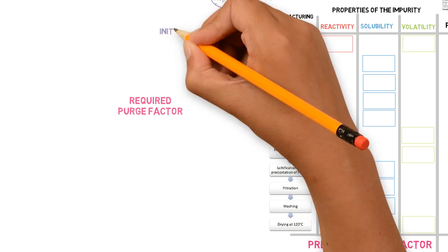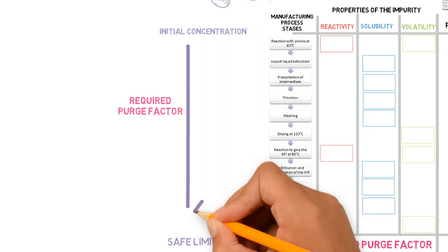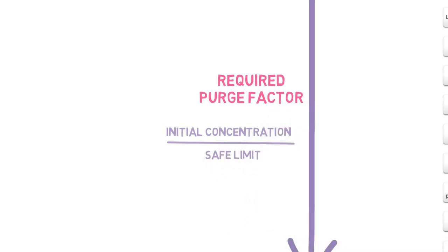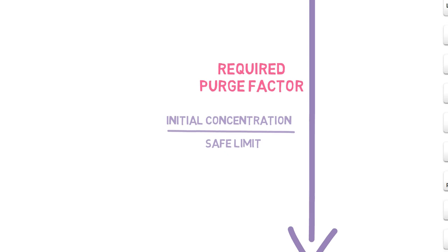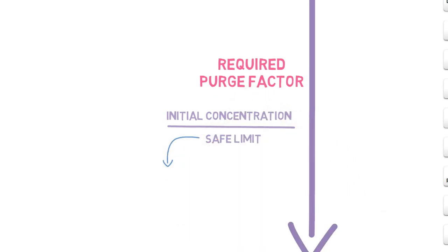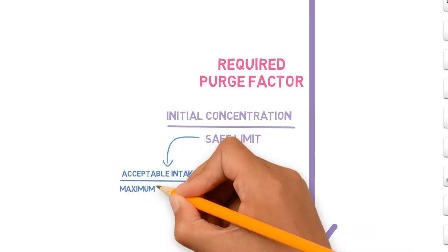If we know the amount of the impurity we started with and how much we must end with to achieve the safe limit, we know how much we need to purge. So, the required purge factor is the initial concentration of the impurity divided by its safe limit. The amount of impurity introduced can be calculated based on the details of the manufacturing process. And the limit can usually be calculated based on the acceptable intake and the maximum daily dose of the API.